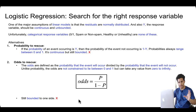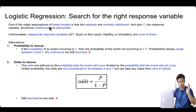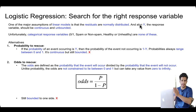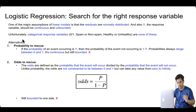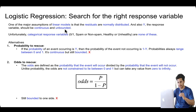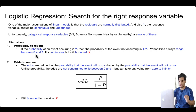One of the major assumptions of any linear model is that the residuals are normally distributed and the response variable needs to be continuous and unbounded. But in classification we have categories — zero or one, spam or non-spam, healthy or unhealthy — which are just labels, not continuous unbounded variables. One approach is to predict probability, since it's a continuous value between zero and one, but probability is bounded between zero and one, so it's not unbounded.